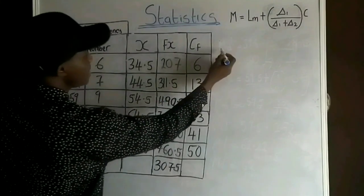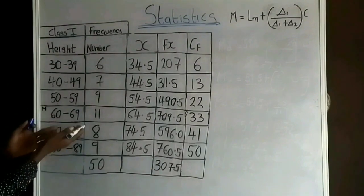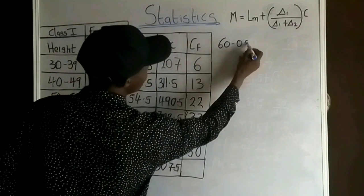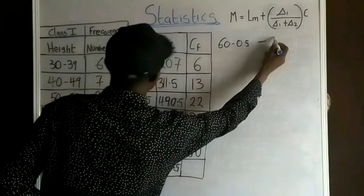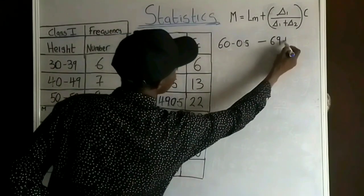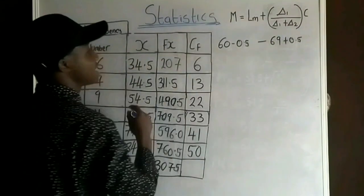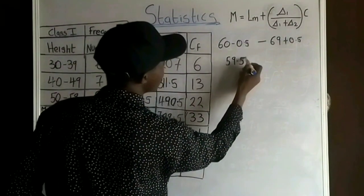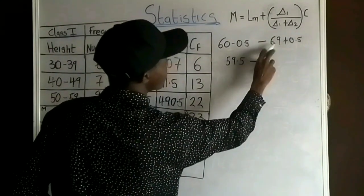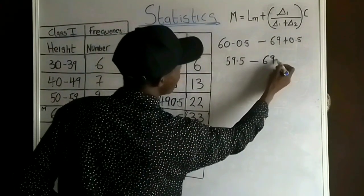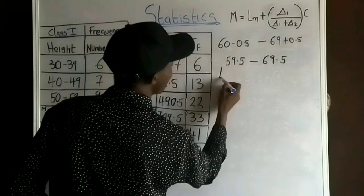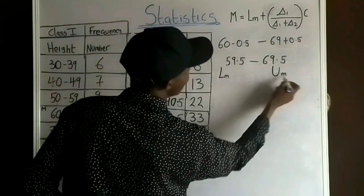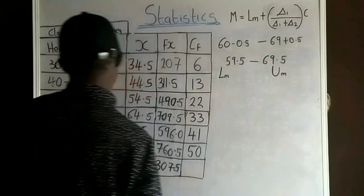I need the class boundary of the modal class. Subtracting 0.5 from 60 and adding 0.5 to 69: the lower class boundary is 59.5 and the upper class boundary is 69.5.